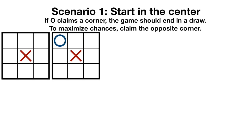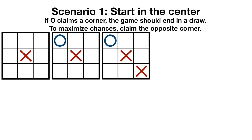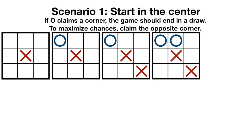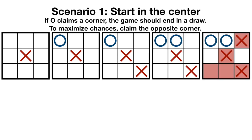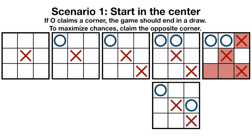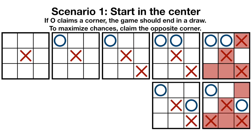If O chooses a corner square, then it's still possible for x to win. To maximize their chances of winning, x should choose the opposite corner to play in. Then if O claims an edge, x will win by creating a double threat. Or if x claims a different edge, x will still win by creating a double threat.